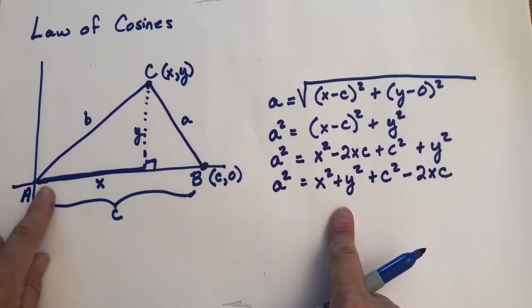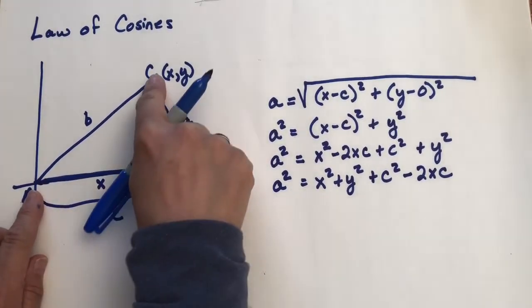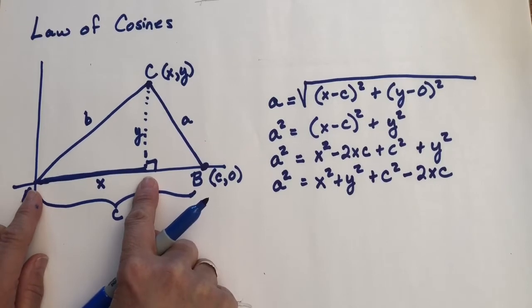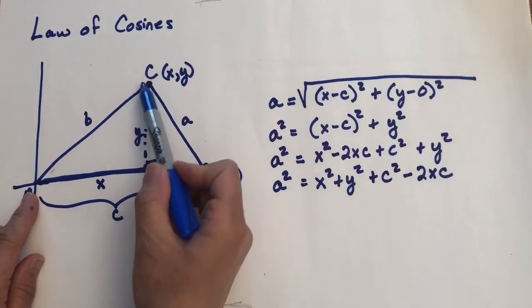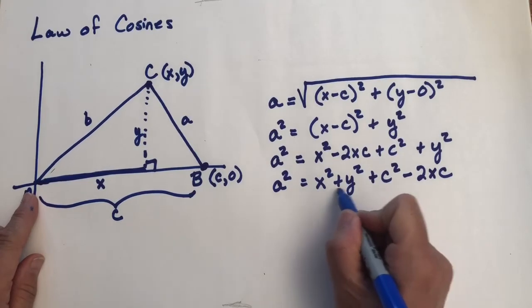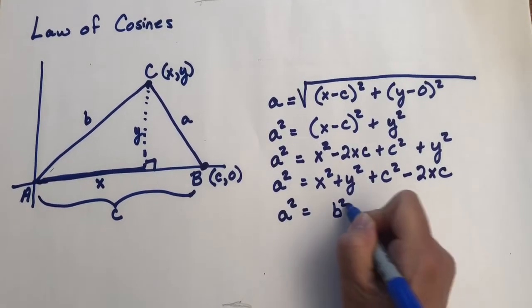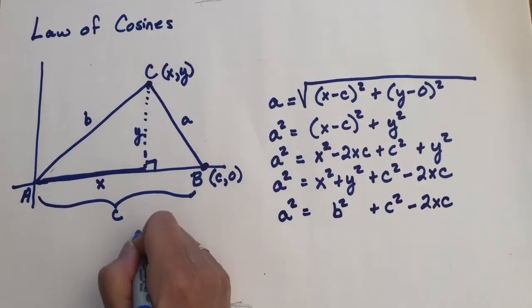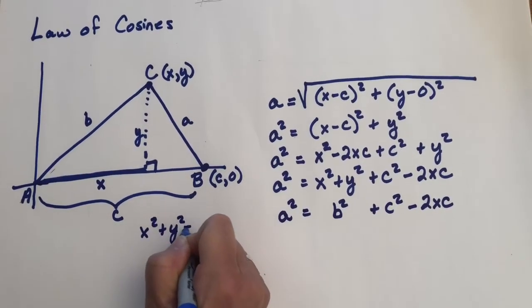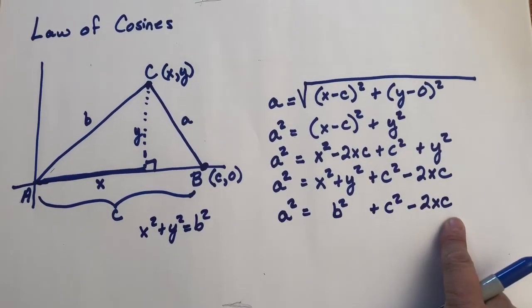Now I want to come back to this triangle. Notice over here, we have this right triangle right here. And within this right triangle, we know the Pythagorean theorem would hold, because it does hold for any right triangle. So X squared plus Y squared would equal B squared, because B is the hypotenuse of that triangle. So I'm going to replace this X squared plus Y squared with B squared. So A squared equals B squared plus C squared minus 2XC. And again, it was because of the X squared plus Y squared equals B squared from this triangle on the left.